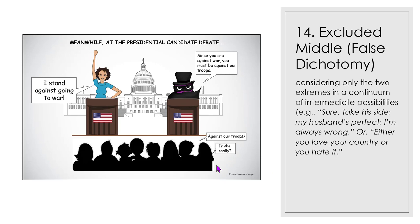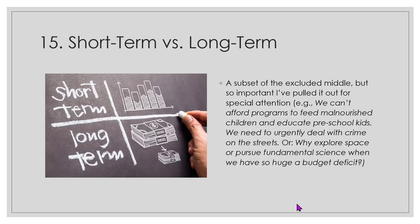You also have to watch for excluded middle — sometimes it looks like things are black and white, one way or the other, which can produce a false dichotomy. You want to have that distribution and not only take into account the extremes in a continuum — there might be an intermediate possibility. Also be careful of short-term versus long-term effects, which is a subset of excluded middle. For example, if we can't afford programs to feed malnourished children and educate preschool kids, then why can we afford to explore space or pursue fundamental science if we have such a huge deficit? These are just two different things going on concurrently, and you don't take into account the middle ground.